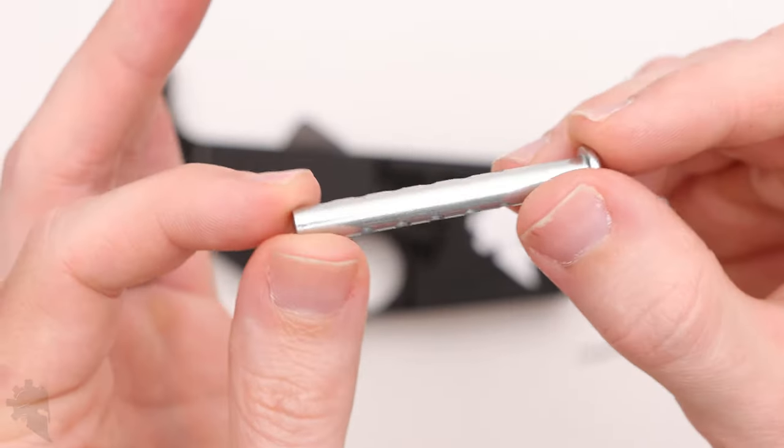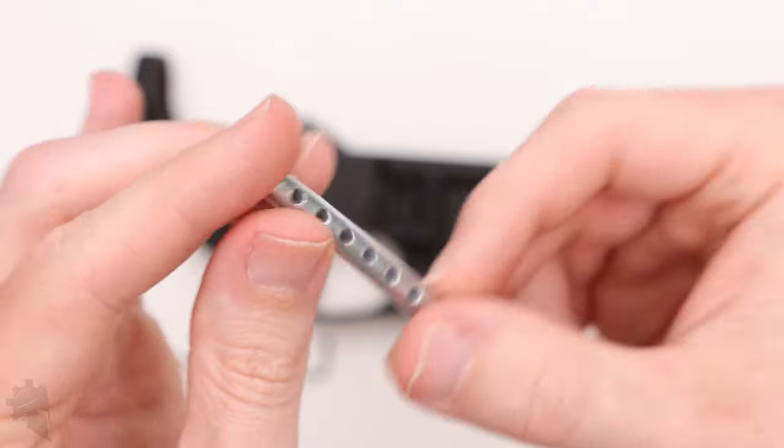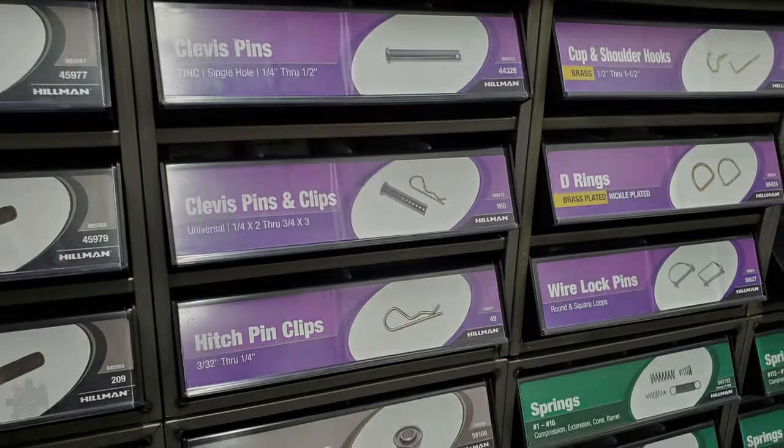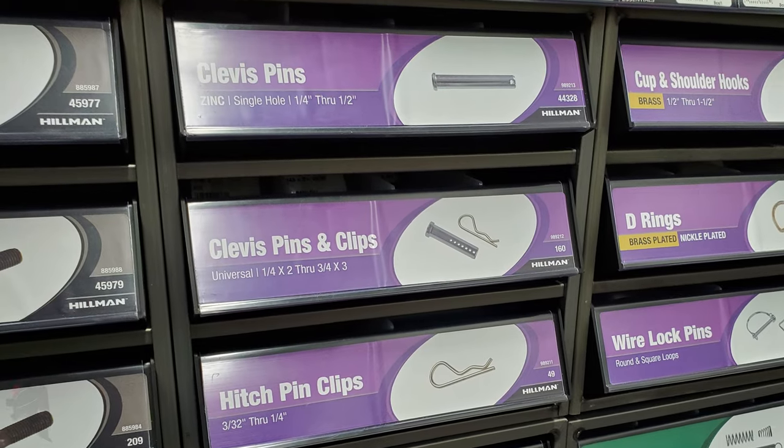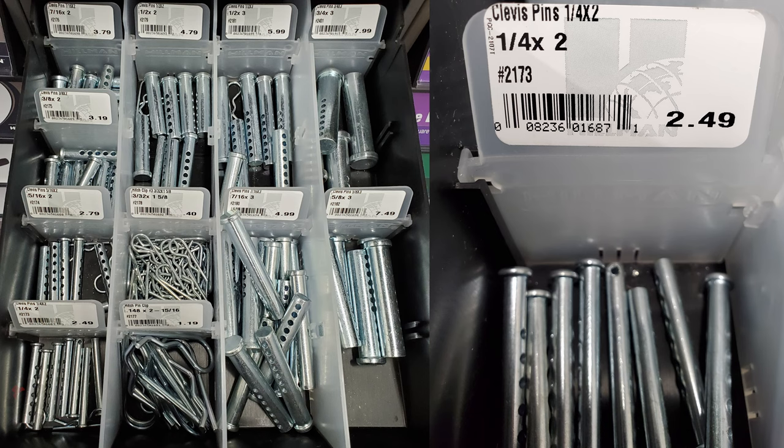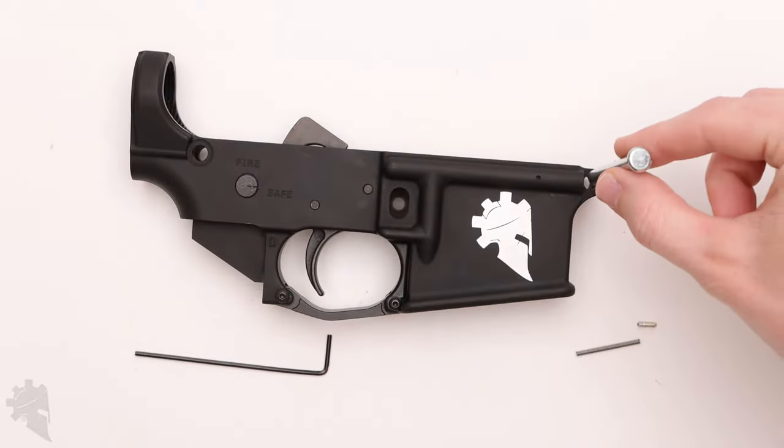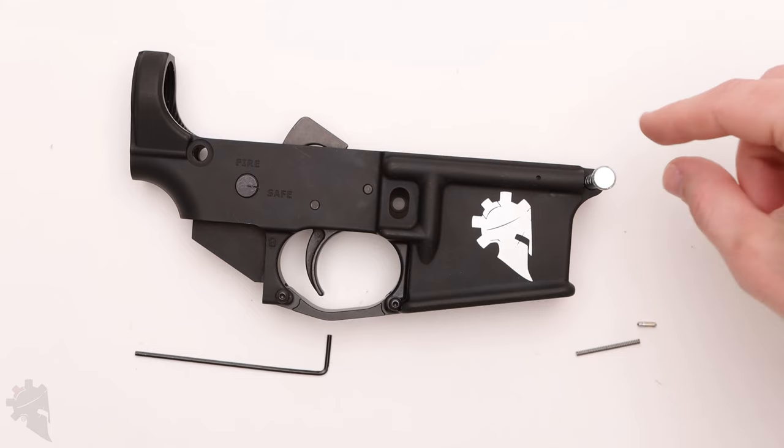If you go to your local hardware store, big box store, Home Depot, Lowe's, whatever, you'll find these in the fastener department. At my store it looks like this. They come in a big bin basically or a shelf and they've got all kinds of different sizes. So it's very important that you get the one quarter inch option because that is the exact dimension of your takedown pin.